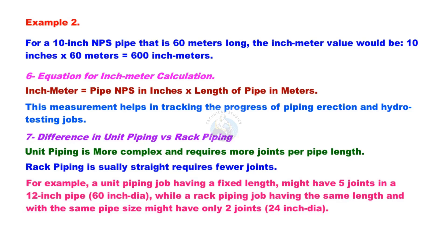For example, a unit piping job might have five joints in a 12-inch pipe with total inch-dia of 60 inches, while a rack piping job with the same pipe size might have only two joints with total inch-dia of 24 inches.